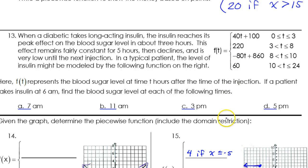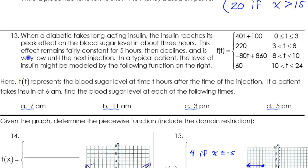Number 13, another real world situation. When a diabetic takes a long-acting insulin, the insulin reaches its peak effect on the blood sugar level in about 3 hours. This effect remains fairly constant for 5 hours, then declines, and is very low until the next injection. In a typical patient, the level of insulin might be modeled by the following function on the right. So here, we have a function where T is the number of hours after the injection. So T is time in hours. And it's going to give us the amount of insulin in the blood.